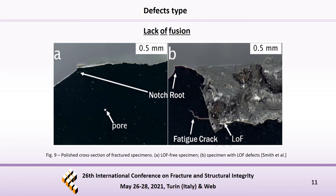According to some authors, lack of fusion defects act as starter notches that nucleate microcracks, and this nucleation can also coalesce into a growing crack, lowering the fatigue life. In the second figure, the fracture surface is shown, where it is possible to see a tortuous path and an irregular fracture surface. This means that fatigue cracks initiate distant from the notch root and close to lack of fusion defects.